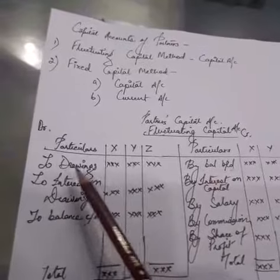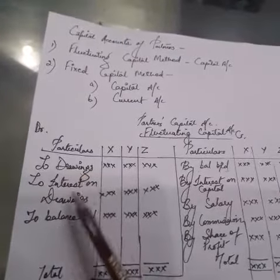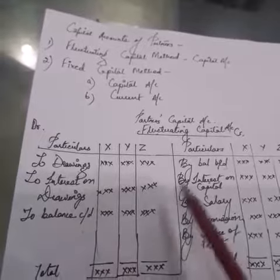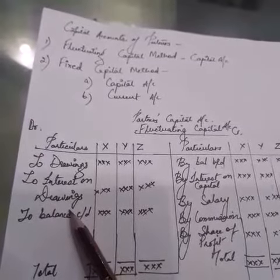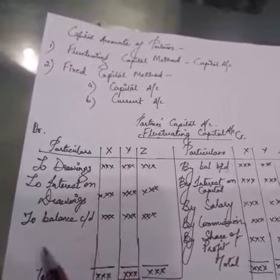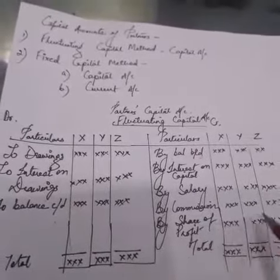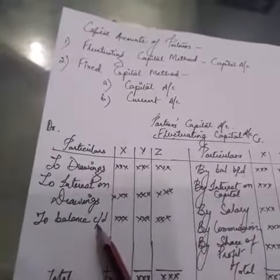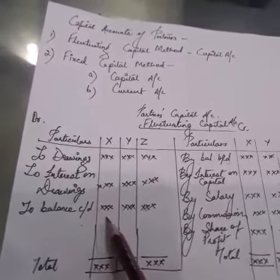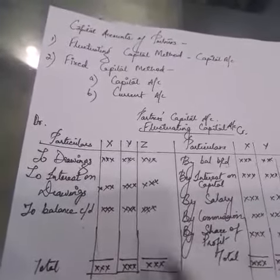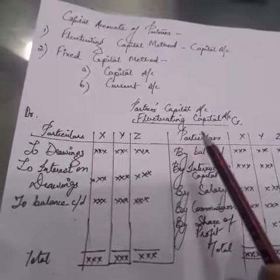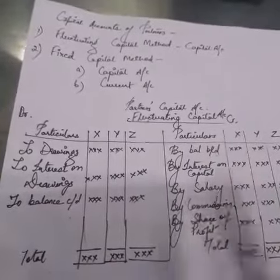On the debit side, you record the drawings and interest on drawings, as these are expenses for the partners. Then, whatever balance you get, you balance it down — the balance will appear on either the debit or the credit side — and then you do the totaling. This completes the fluctuating capital account.